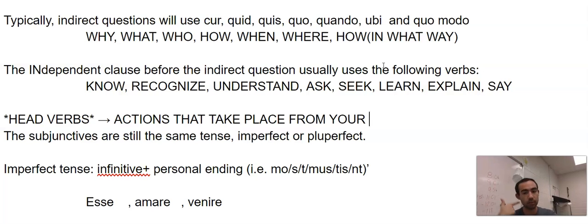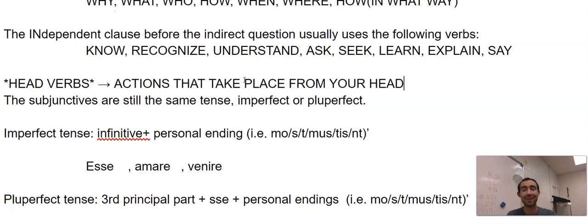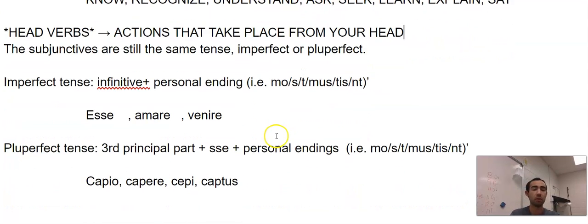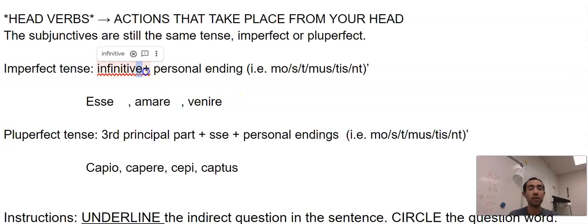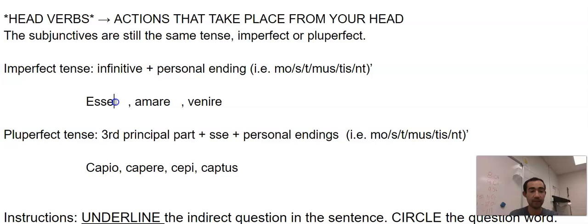The subjunctives are the same tense, they're not different, it's either imperfect or pluperfect. Right now we'll get into the present tense subjunctives in a little bit and perfect tense in a little bit. So it's the infinitive plus your personal endings of m, s, t, mus, tis, nt, so esset, amarem, etc.